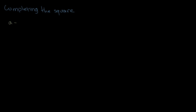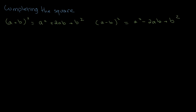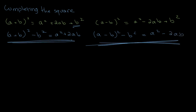I'm going to start off by writing down equations you already know. (A + B)² = A² + 2AB + B². Another equation is (A - B)² = A² - 2AB + B². We want to rearrange these: (A + B)² - B² = A² + 2AB, and (A - B)² - B² = A² - 2AB. Remember these expressions as we learn how to complete the square.